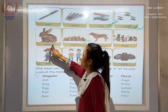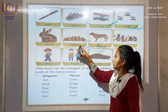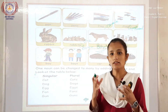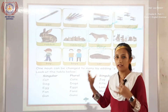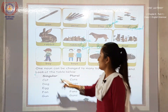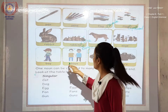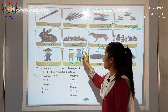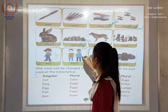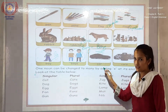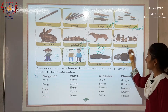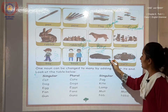Rabbit — R-A-B-B-I-T. Whenever we have many — one or more than one — we use S. Boy — B-O-Y — there are two boys, B-O-Y-S, and there is only one boy, so this is singular and this is plural. Car — C-A-R — one car is singular, and C-A-R-S — there are so many cars — this is plural.